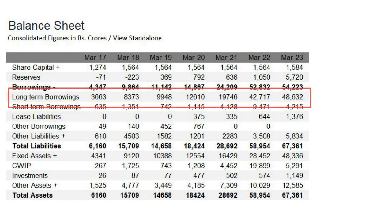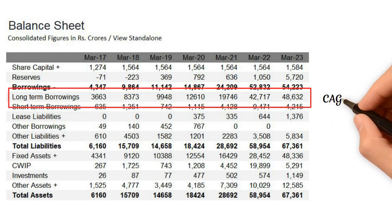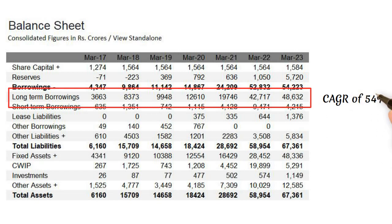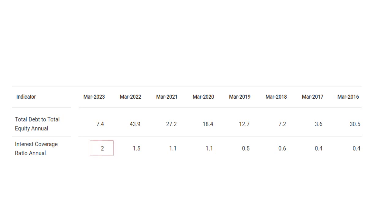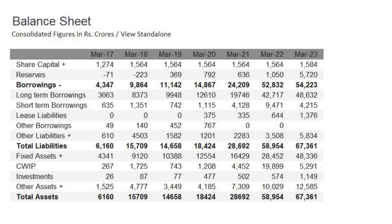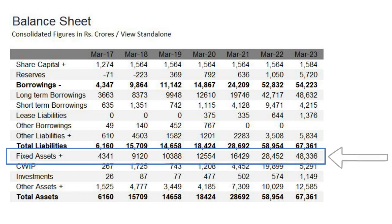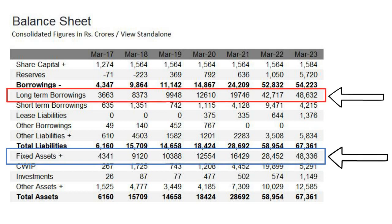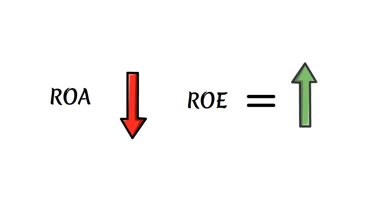Let's delve deeper into these numbers. Adani Green Energy has been consistently borrowing long-term debt at a CAGR of 54% over the past 6 years. However, as of FY 2023, the interest coverage ratio remains uncomfortably low at 2, while the total debt-to-equity ratio remains elevated at 7.5. A review of the year-on-year trend reveals these metrics have consistently remained at high levels. This implies the company has been generating assets by taking on substantial leverage through long-term borrowing, while equity has remained unchanged. Consequently, the ROE decreases, while the ROA either remains the same or improves significantly.